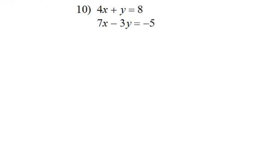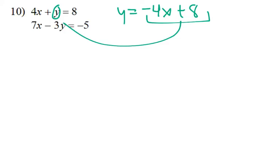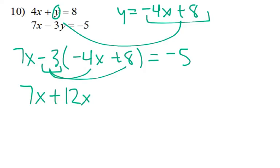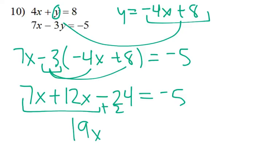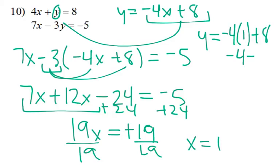Last problem. I'm going to solve for y by subtracting 4x, getting y equals negative 4x plus 8. Now I can replace the y with that whole piece: 7x minus 3 times negative 4x plus 8. Remember, that minus 3 is like a negative 3, so it's going to affect our answers when we multiply. 7x and 12x is 19x. Add 24, we get negative 9 — wait, positive 19. Divide by 19, x equals 1. We can plug in that number for x and we get positive 4 equals y. So 1, 4 is where they intersect.